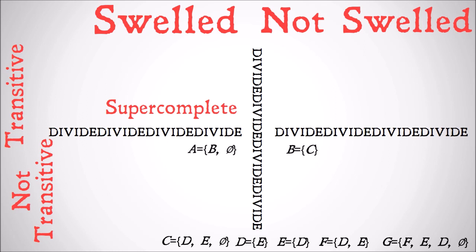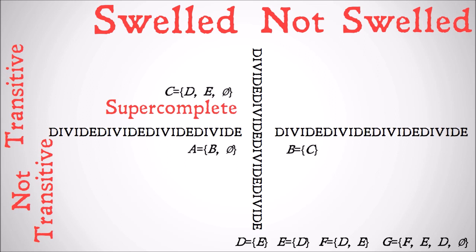Is C also transitive? For it to be transitive, all the members of its members have to be contained in the set. The only member of D is E, and E is contained in C. The only member of E is D, and D is also contained in C. The null set has no members, so vacuously they're all contained in C. This makes C super complete.